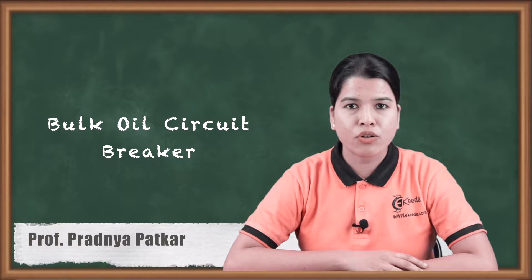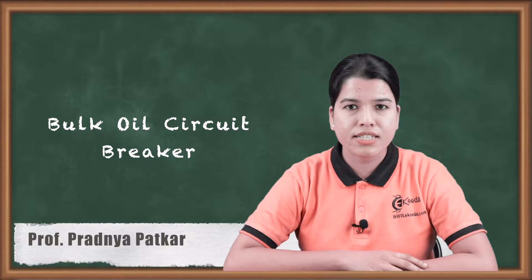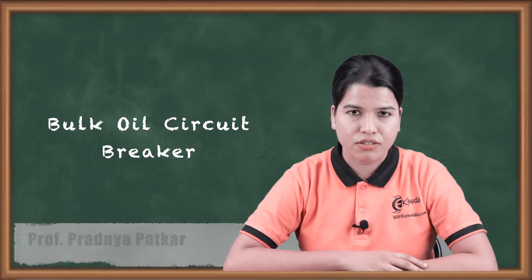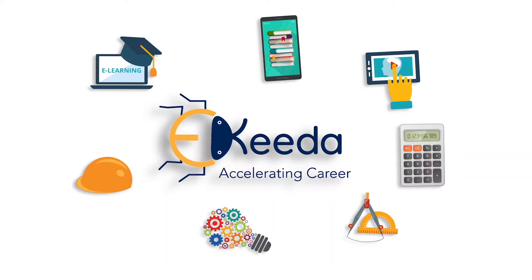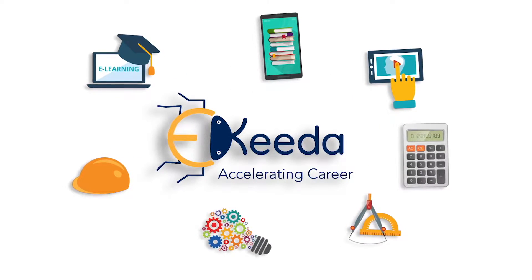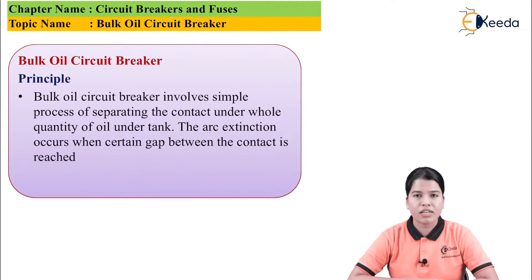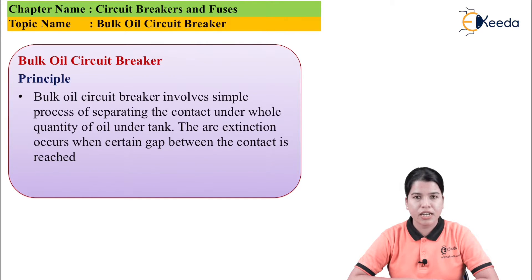In this video we are going to study bulk oil circuit breakers, which use the same principle for arc extinction. The basic principle is that the bulk oil circuit breaker involves a simple process of arc extinction in which the contacts of the circuit breaker are opened under the presence of oil.